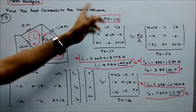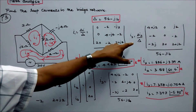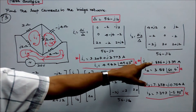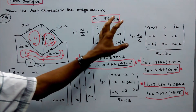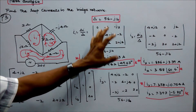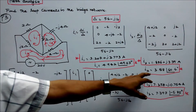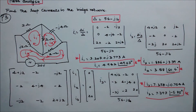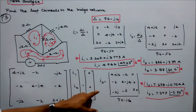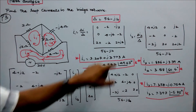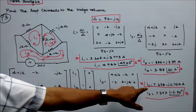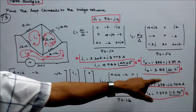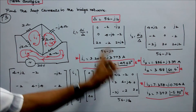Similarly, i2 = delta_i2 / delta = 1.886 + j3.39 amps (rectangular), or 3.88 angle 60.4 degrees (polar). And i3 = delta_i3 / delta = 7.358 minus j0.754 amps (rectangular), or 7.397 angle minus 5.85 degrees (polar).